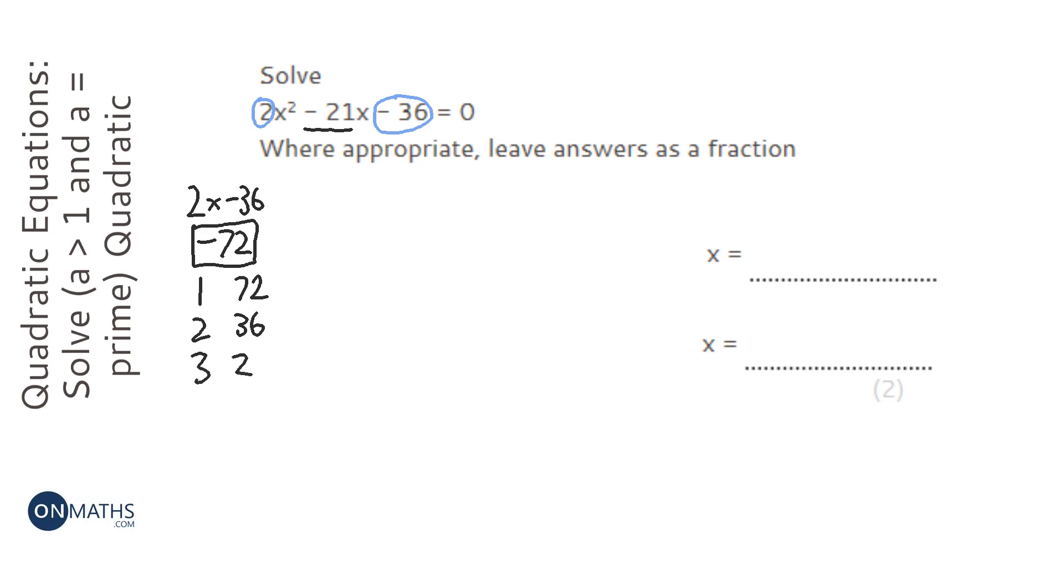But 3 and 24, let's have a look. If we make the 24 negative and the 3 positive, then that does add together to make minus 21. So we're going to rewrite the question, but instead of minus 21x, we're going to say plus 3x minus 24x minus 36. Oh, missed the x, equals 0. OK.